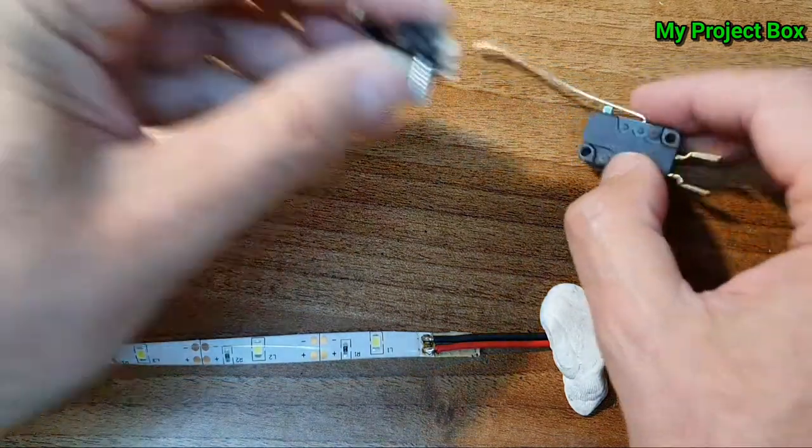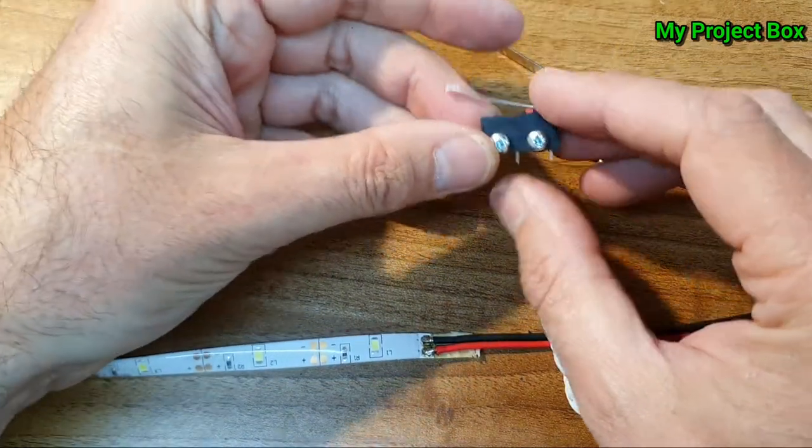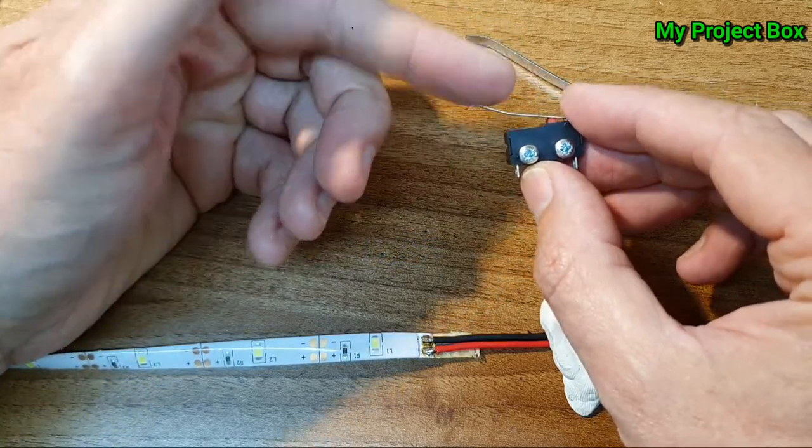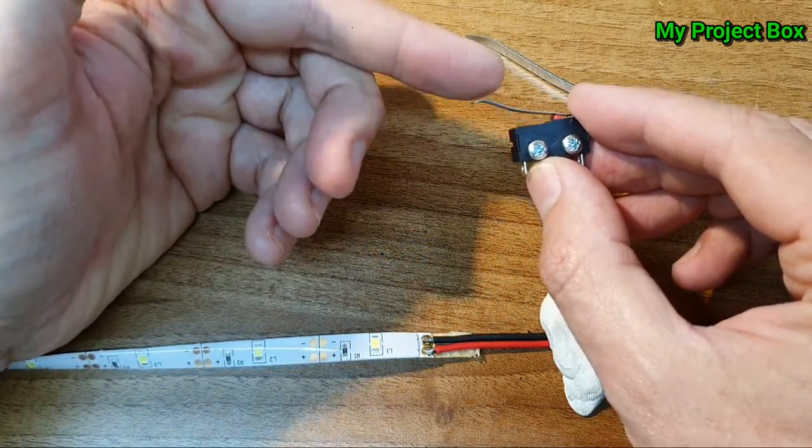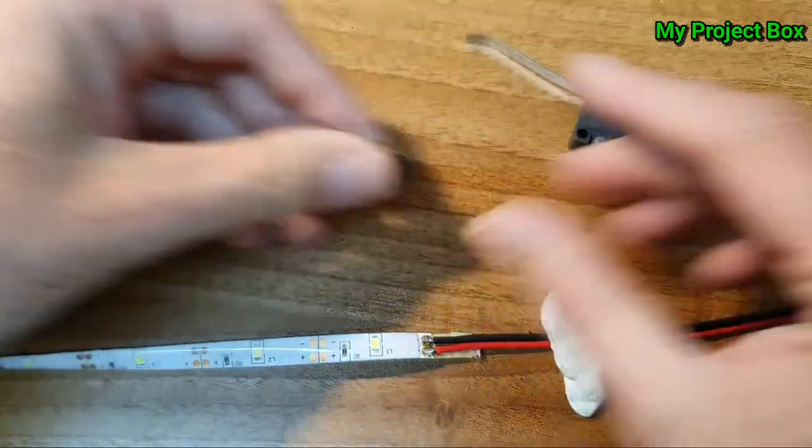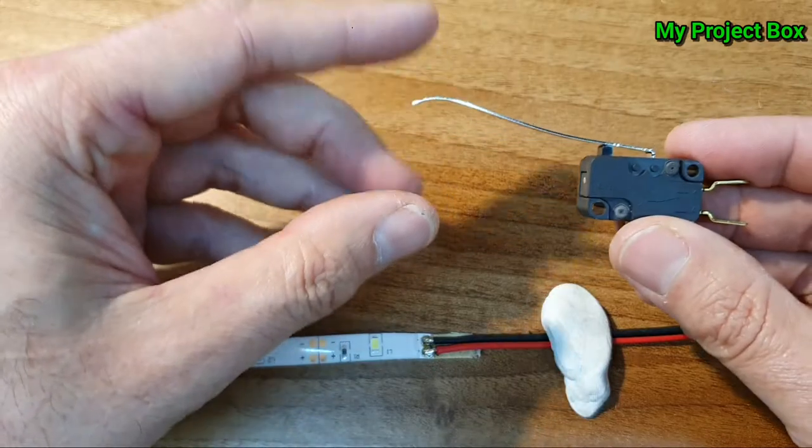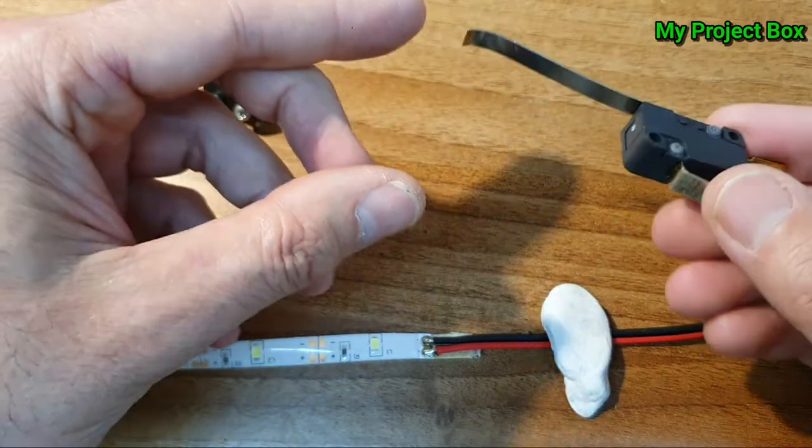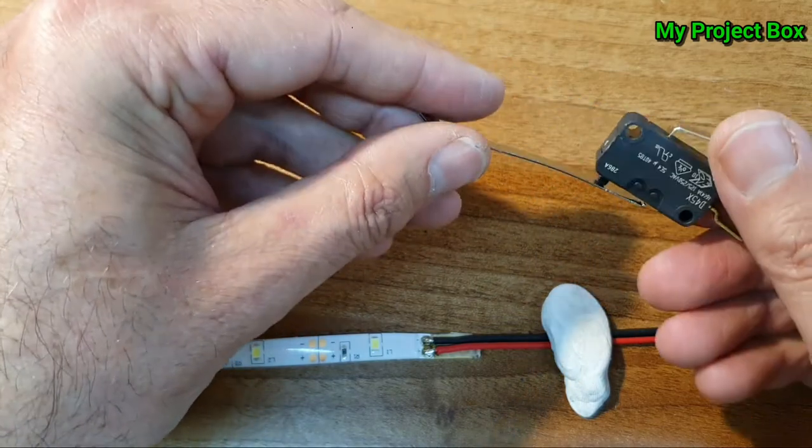You can use a smaller one like this, which will make it more discreet. But bear in mind that the door would have to press it a very small amount, whereas this one, there's more travel so it's easier for the door to trigger the switch. But then it's bigger and chunkier - it might not look as pretty.